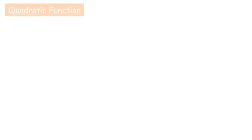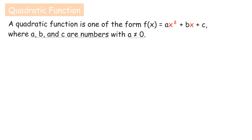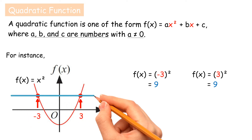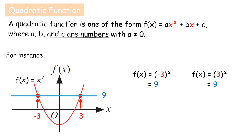Quadratic Function: A quadratic function is one of the form f(x) equals ax² plus bx plus c, where a, b, and c are numbers, with a not equal to zero. All quadratic functions have the same image for two different objects. The type of relation of a quadratic function is a many-to-one relation.